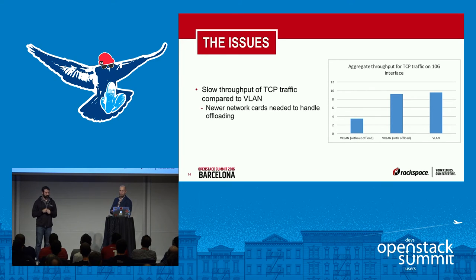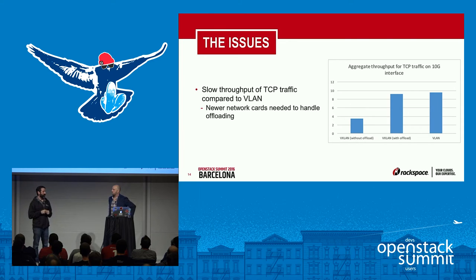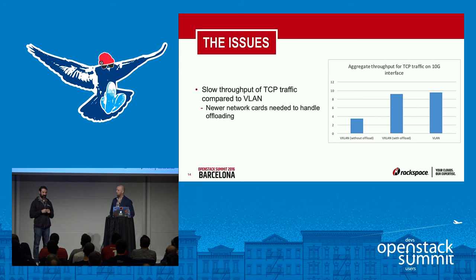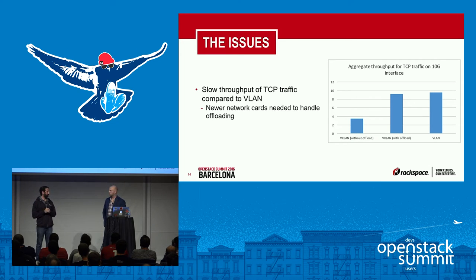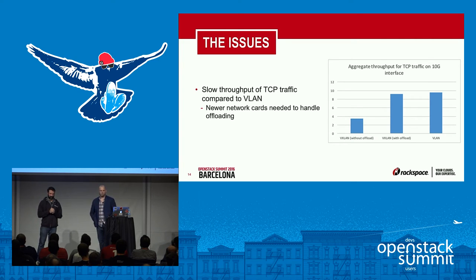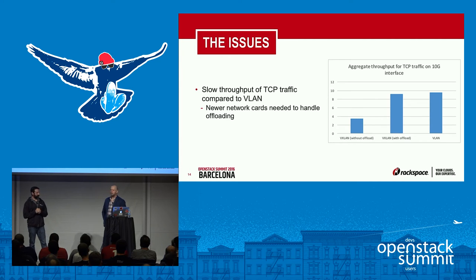Another issue was performance. The NICs we were using showed a significant decrease on a 10 Gbps network — down to roughly 3.5 Gbps using VXLan — compared to about line speed at 9.8 Gbps using VLAN. We performed similar tests on different NICs with newer hardware that had VXLan offloading enabled, and we got closer to VLAN performance, around 9.2 to 9.5 Gbps — close enough to make it worthwhile.